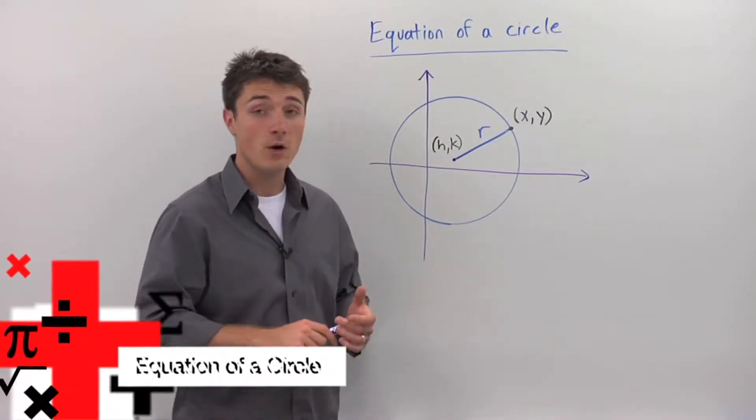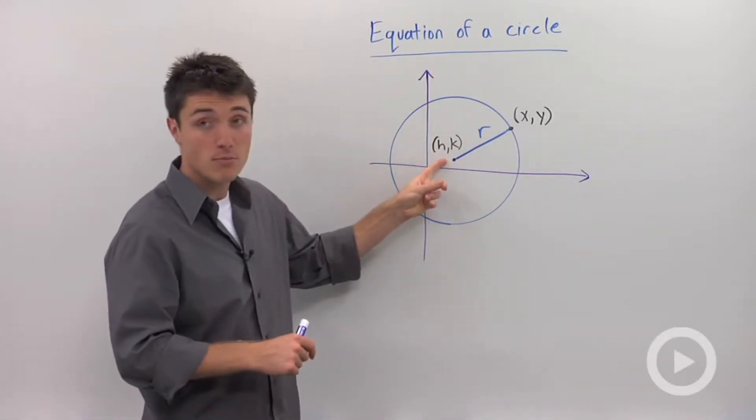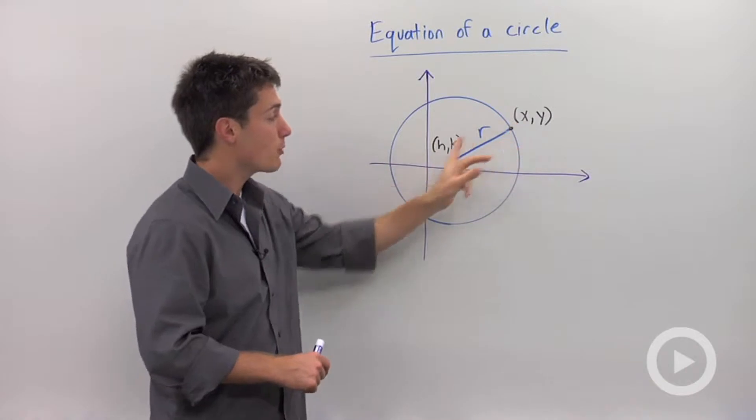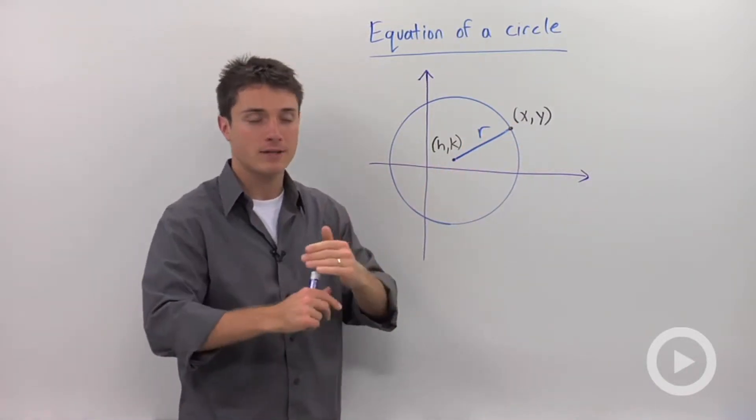In geometry, it's helpful to come up with an equation that will describe a circle that's centered at some point, h and k, with a radius r. Well before we come up with this, let's do a little backtrack.